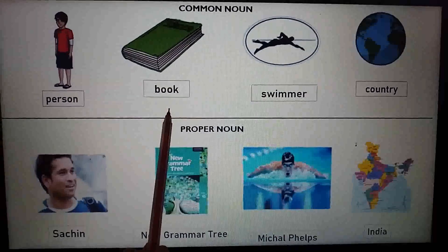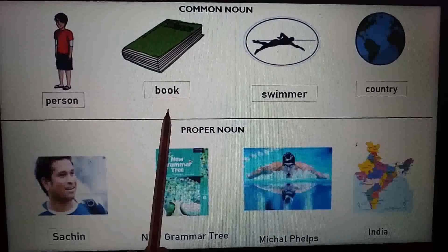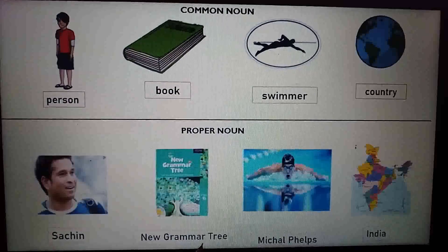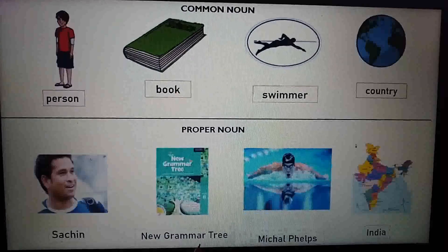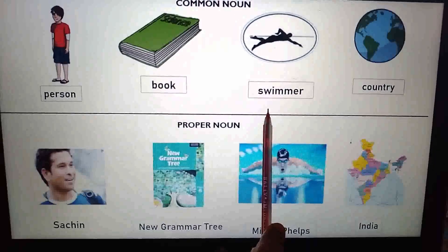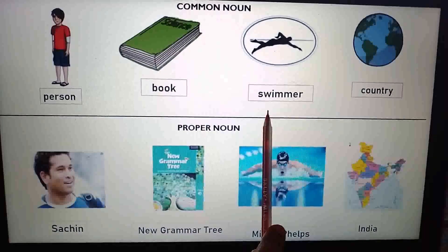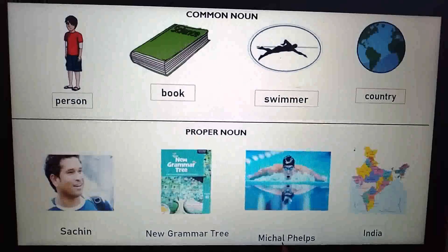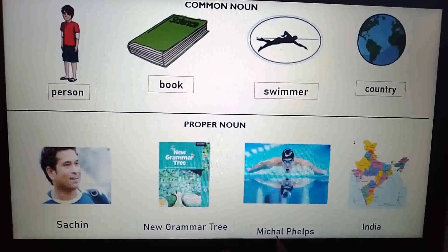This is a picture of a book. Book is a common noun. When a book is given a specific name, then it becomes a proper noun. New Grammar Tree is a book. New Grammar Tree is a special name given to a book. So, New Grammar Tree is a proper noun. This is a picture of a swimmer. Swimmer is a common noun. When a swimmer is given a specific name, it becomes a proper noun. Michael Phelps is a swimmer. Michael Phelps is a special name given to a swimmer. So, Michael Phelps is a proper noun.